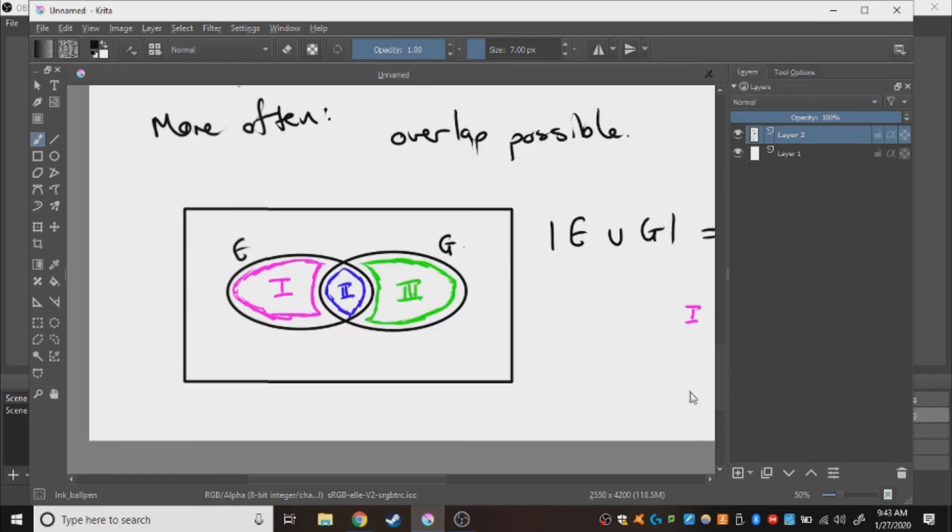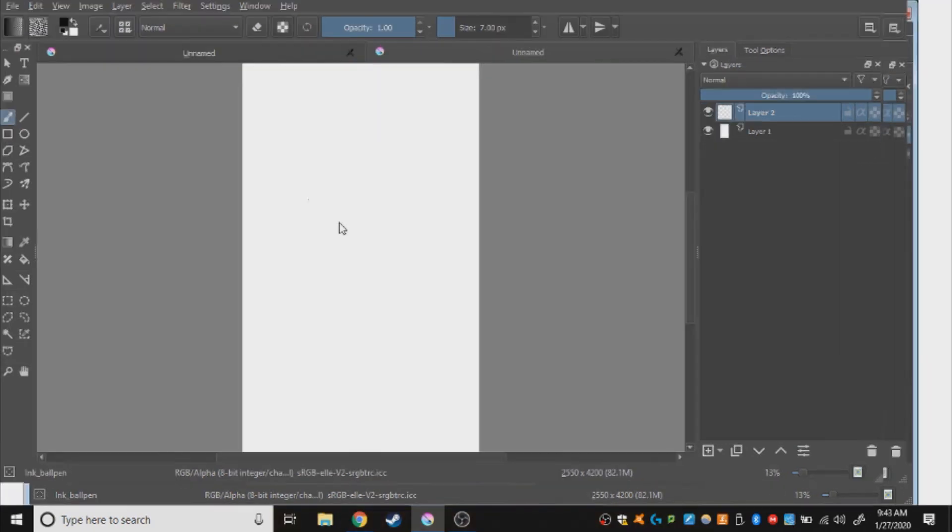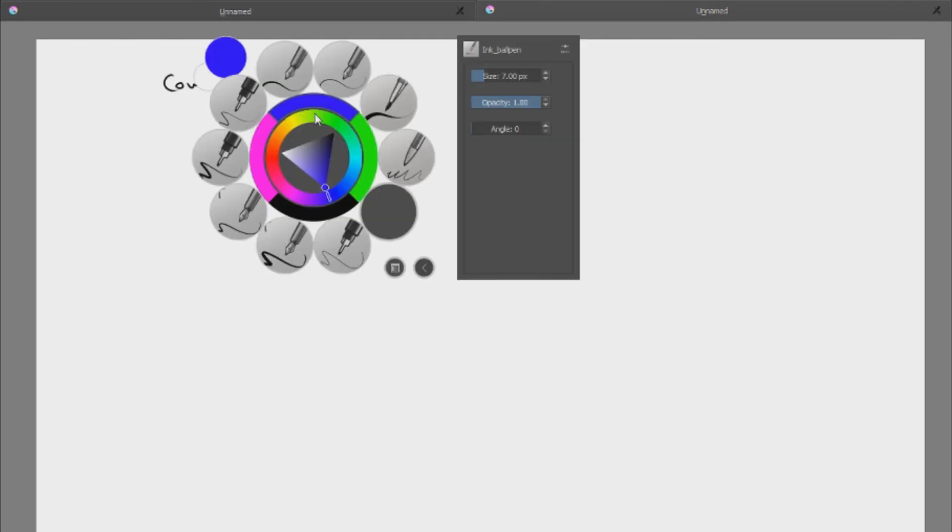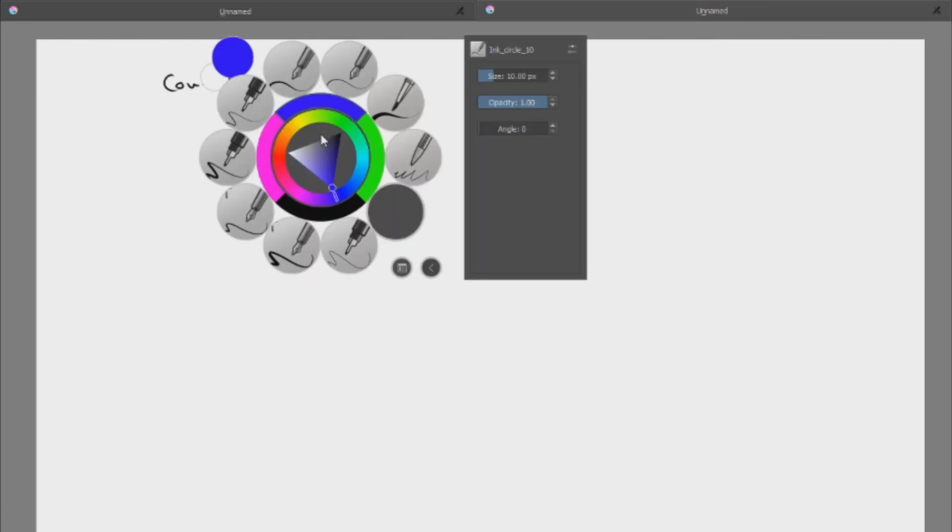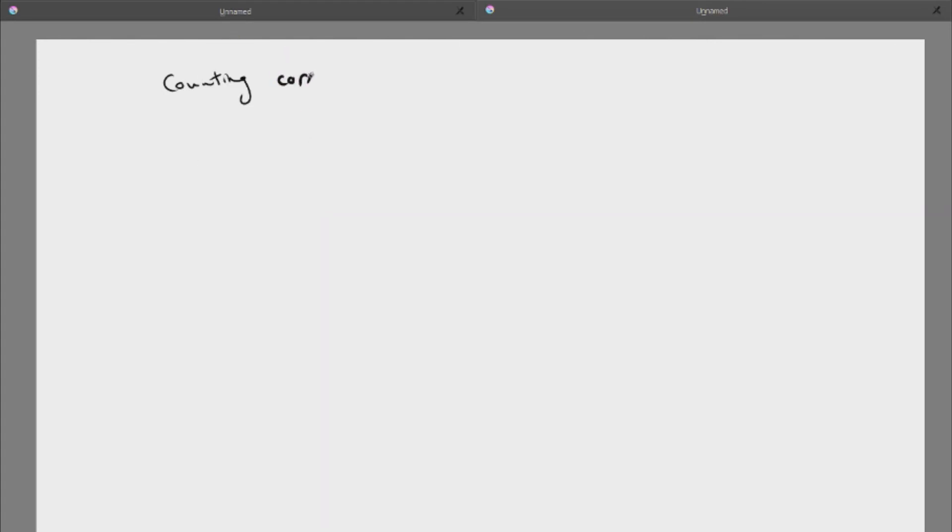In counting, which is what I'm doing, I'm counting the different elements in a combination of collections. In general, in a counting problem, in order for me to get the right answer here, there are two important checkboxes that I have to consider. They're not super complicated, but I do want to mention them. Counting correctly.